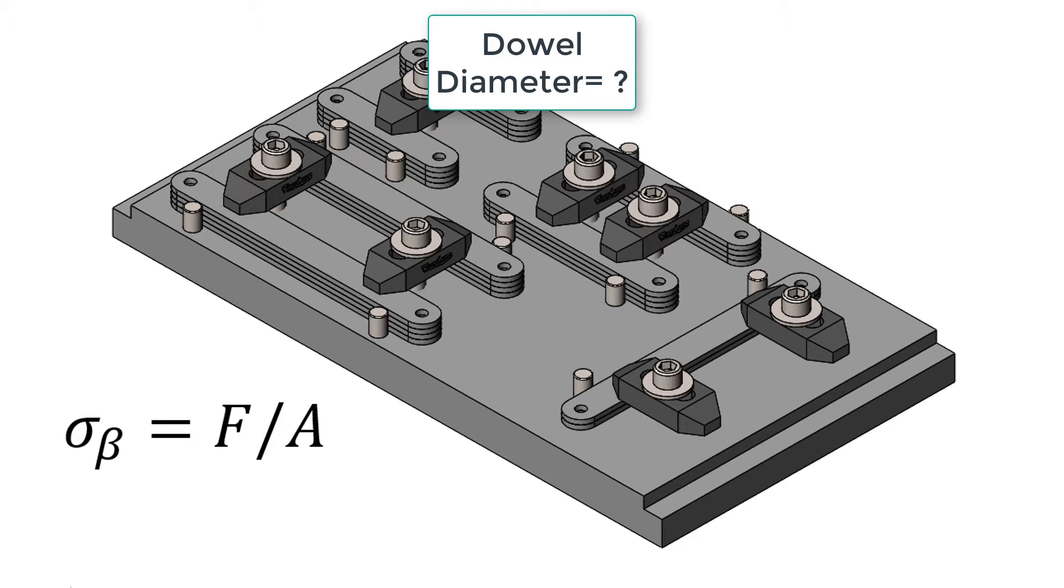The bearing strength will be the yield strength of the material into which the dowel is placed. The force is the cutting force and will be doubled because we always use a safety factor of two. The area in our formula will be the length of engagement of the dowel times its diameter.